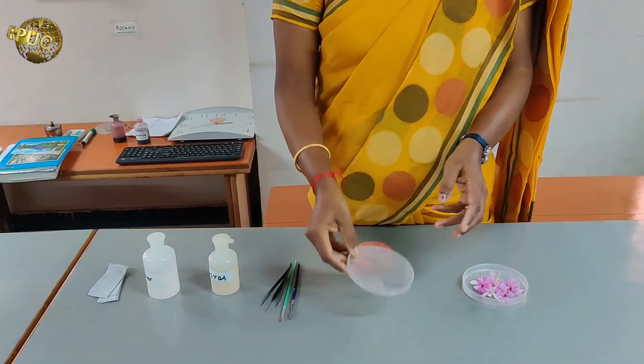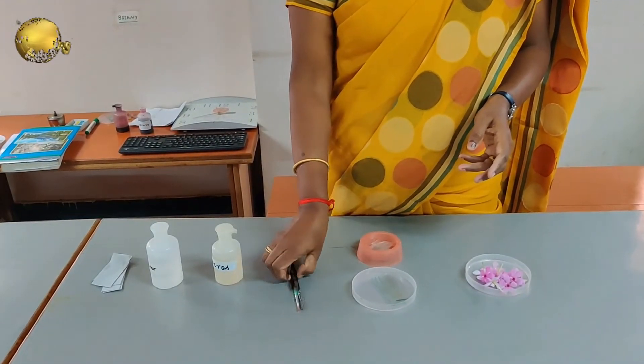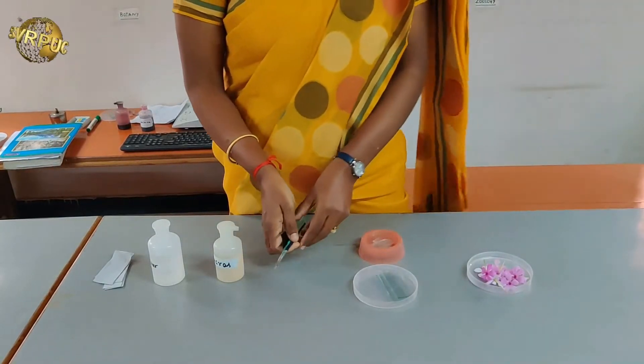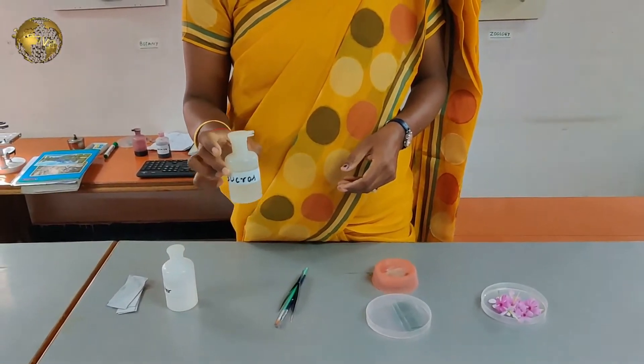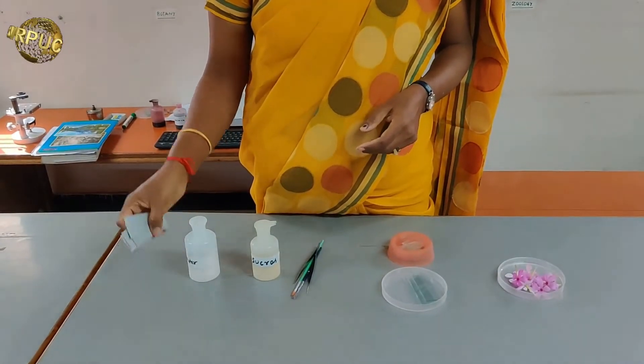The materials required for this experiment are: Vinca rosea, cavity slide, cover slip, instruments, 10% sucrose solution, water, and blotting paper.